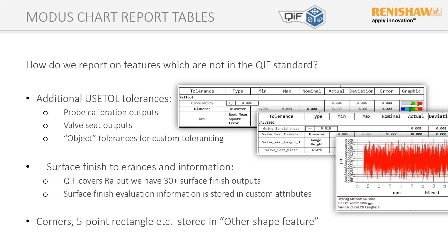For the user-defined unit tolerance, there's an input for user-defined text. Against that, we could put a word or description — if it was a percentage, we could put the word 'percent' in the user-defined text field, so we'd know exactly what piece of information was being reported. That covered how we got the information into the QIF, but it didn't necessarily give us what we needed to make our reports look correct. We needed to add other information to make these tables look right for reporting.